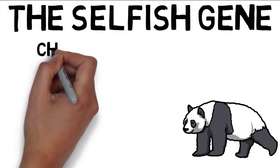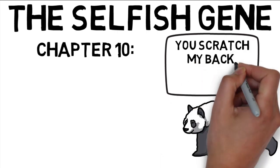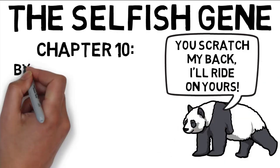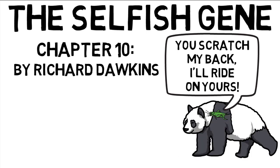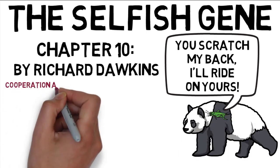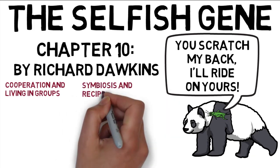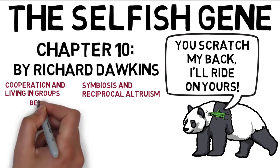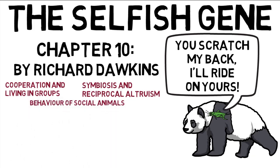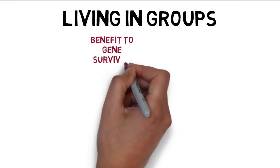The Selfish Gene, Chapter 10: 'You Scratch My Back, I'll Ride On Yours' by Richard Dawkins. This chapter addresses the reasons why animals cooperate and generally live in groups. Dawkins discusses the concepts of symbiosis and reciprocal altruism and provides a possible explanation for the behavior of social animals.